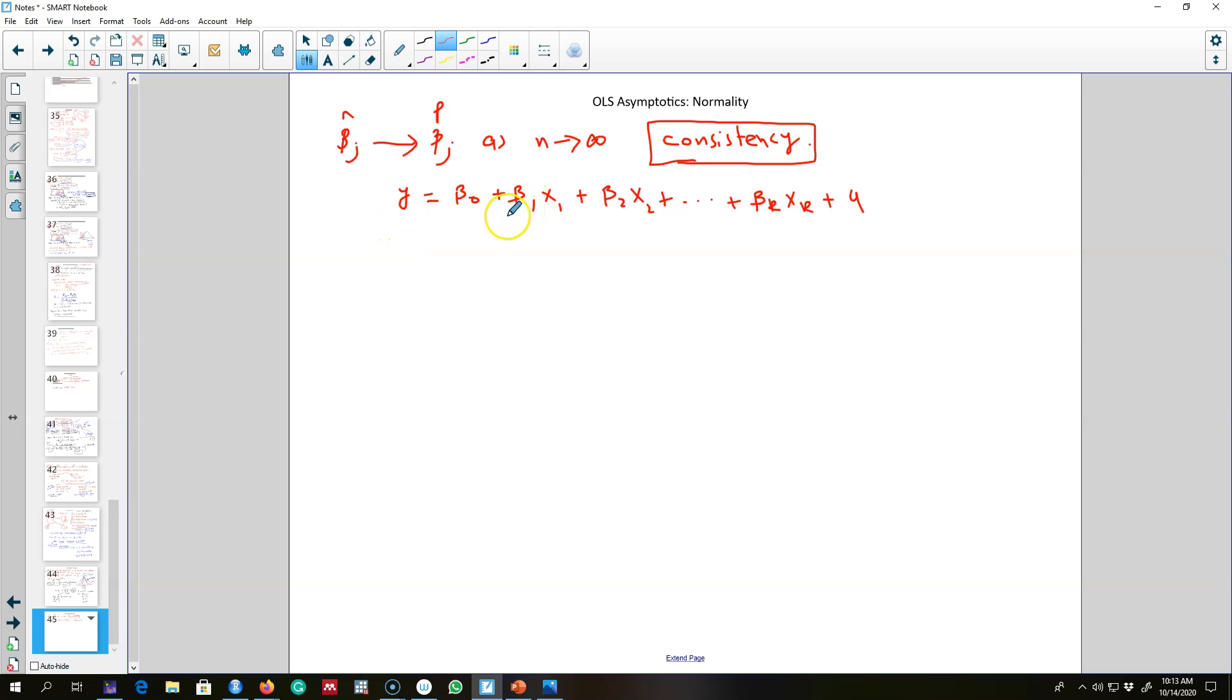This is an important property of OLS estimator, but to make statistical inferences we need the sampling distribution of this error term in the population. It will allow us to use f-test and t-test to make statistical inferences about these coefficient values. In this video, I'm going to talk about the second property of OLS asymptotics, and that is normality.